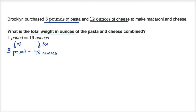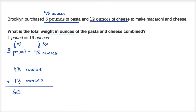So Brooklyn's three pounds of pasta can also be viewed as 48 ounces of pasta. She has 48 ounces of pasta and 12 ounces of cheese. So the total weight is 48 ounces plus 12 ounces of cheese, giving us a total of 60 ounces of pasta and cheese combined.